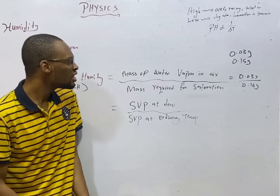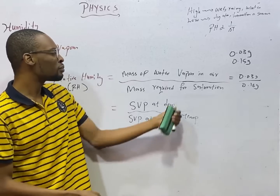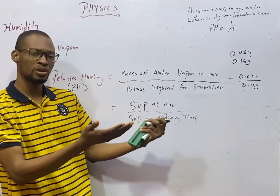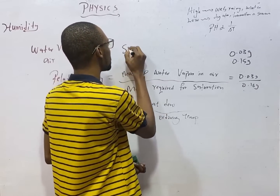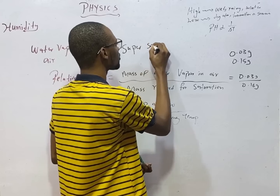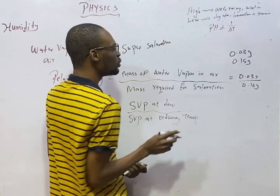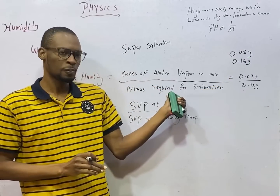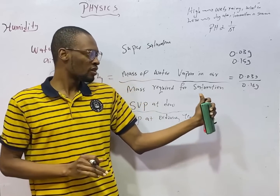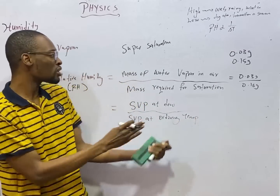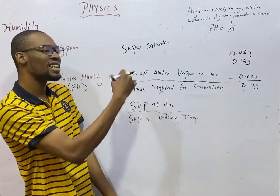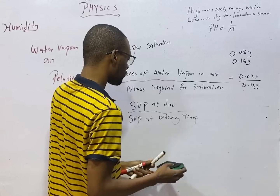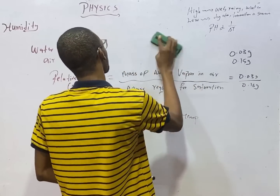What happens if the mass of water vapor in air is more than required? It means we have more water vapor — we have super saturation. For example, if we need 0.15 grams for saturation but we have 3 grams, we have more water vapor in air than required. That is excess. This takes us to two types of humidity: low humidity and high humidity.